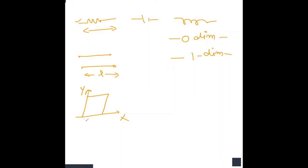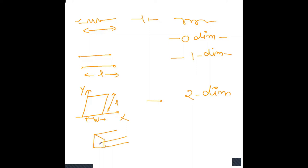For a planar element, its characteristics change with both width and length, so we can control the characteristics by varying width and length. For example, in the case of microstrip lines, we can control the impedance by changing the width. This kind of element is called a two-dimensional or planar element. In contrast, waveguides are three-dimensional elements because their characteristics are controlled by width, height, and length.